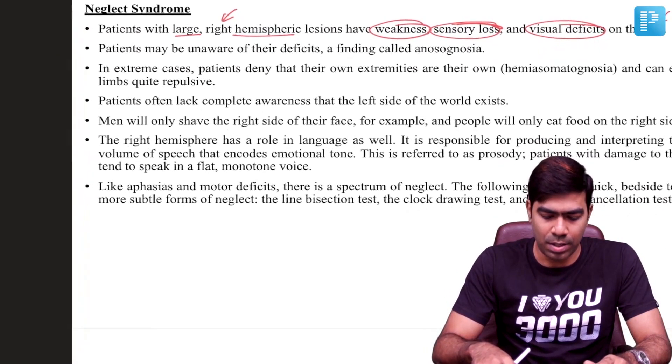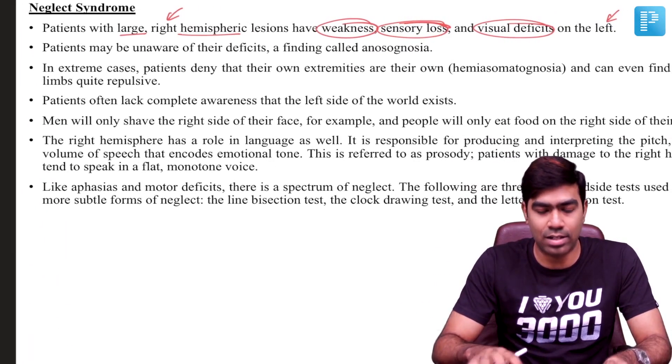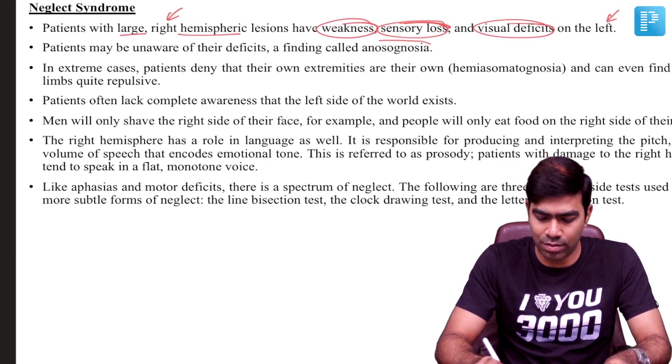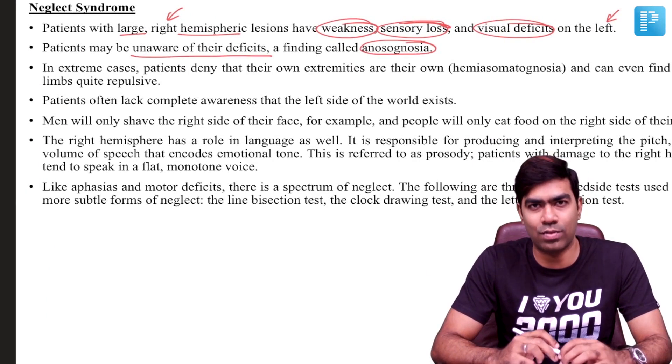Apart from that, large non-dominant hemispherical lesions can result in other peculiar features — for example, anosognosia, where the patient will be unaware of their own deficits. A patient may not be aware of sensory deficits on the left side, which is called sensory anosognosia. Some patients may not be aware of motor deficits on the left side, which is called motor anosognosia, and patients may not be aware of visual field effects on the left side, which is called visual anosognosia.